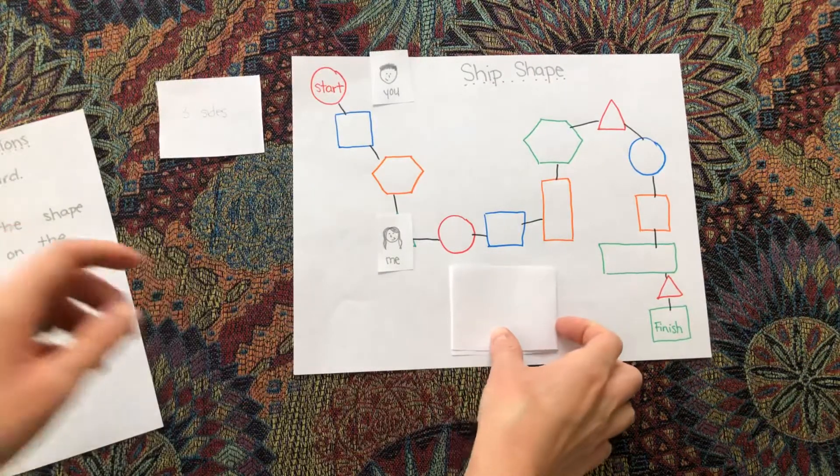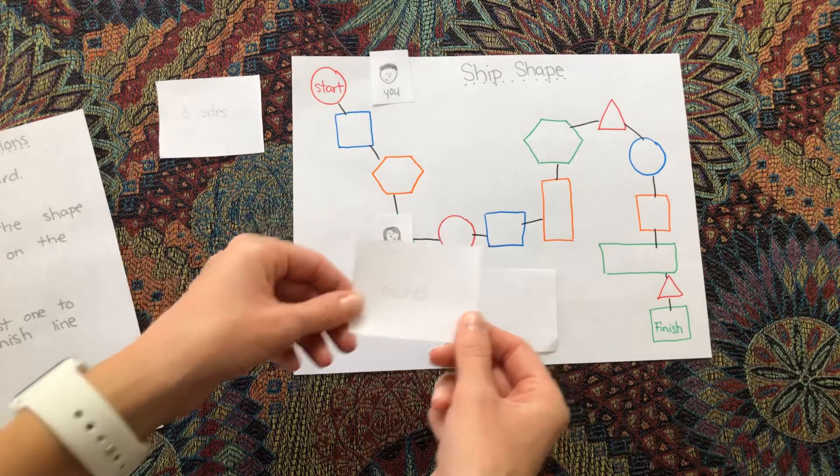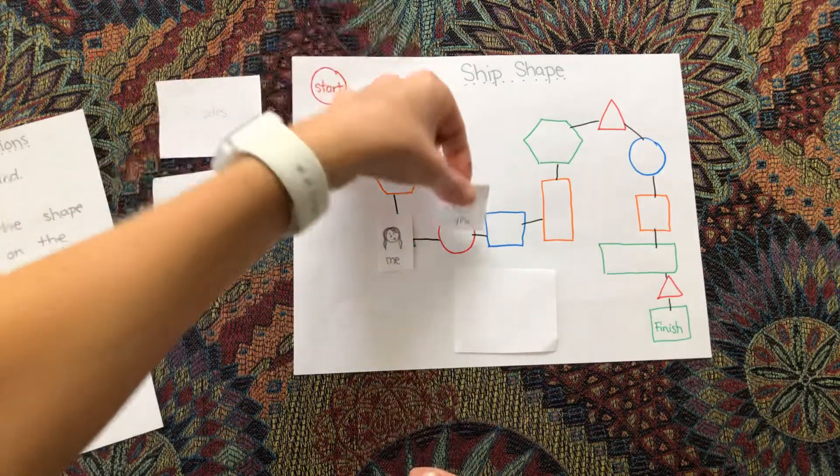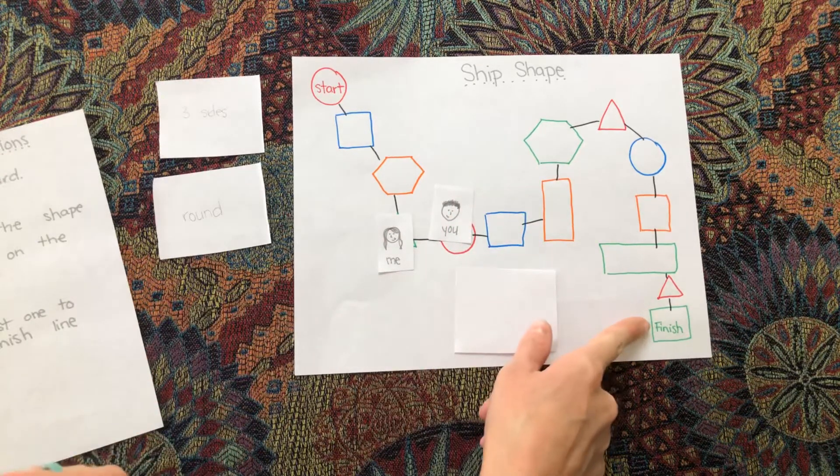The first one to the finish line wins. So after whoever I'm playing the game with and I draw our cards, it says he needs to go to a shape that is round. And we go through all the cards. Whoever makes it to the finish line first wins.